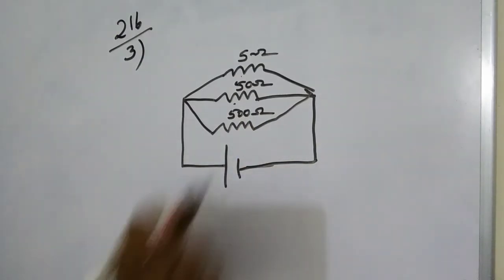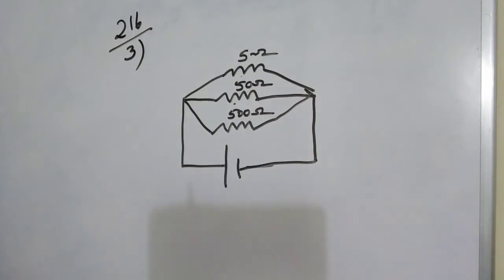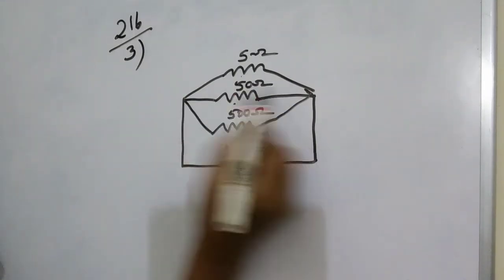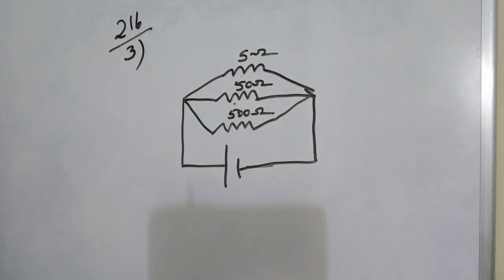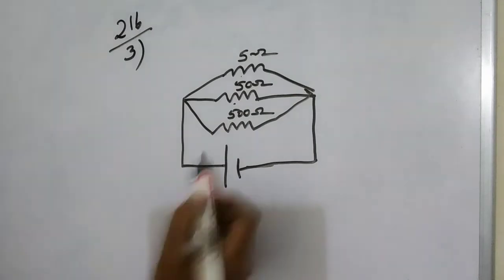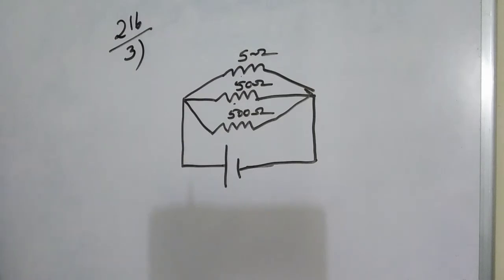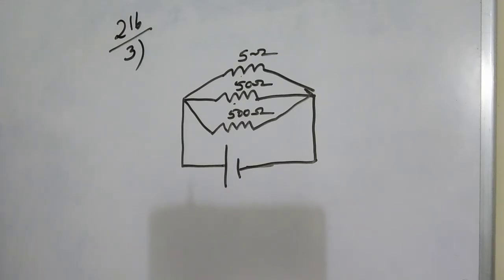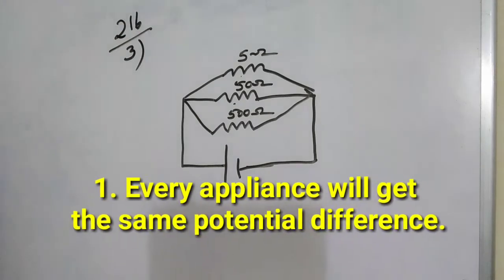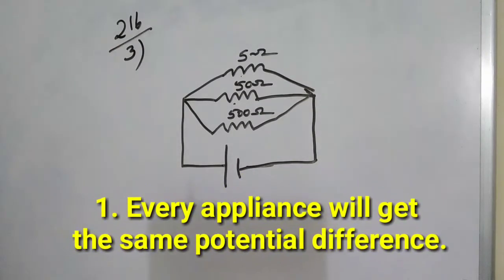When we are connecting these appliances in parallel, the potential difference across each appliance is the same. This is not possible in the case of a series circuit. The potential difference remains the same for the lamp, toaster, and the water filter. Each and every appliance connected in parallel will get the same potential difference — that is one advantage.